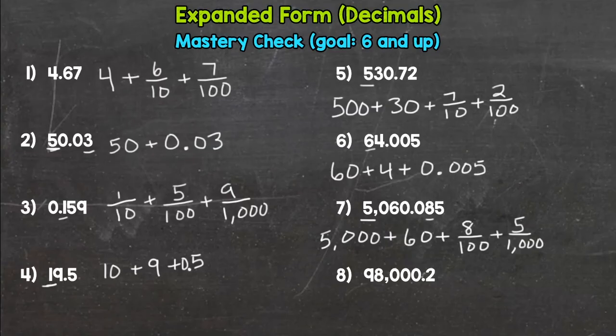Number eight, we have a nine worth ninety thousand plus an eight with the value of eight thousand and a two with a value of two tenths.